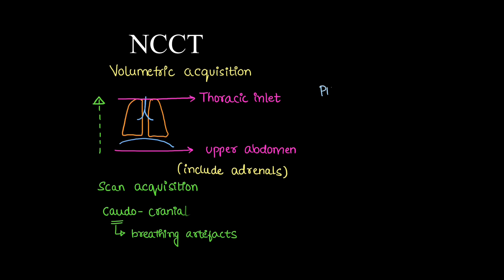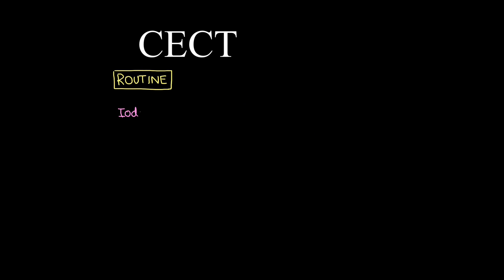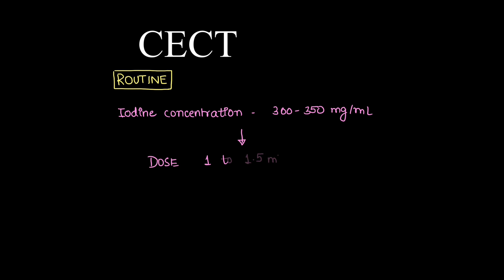Other machine parameters include kVp set to 100–140 and mAs 130–200. Coming to the basics of contrast-enhanced CT, the routine protocol includes contrast with iodine concentration of 300–350 mg per mL.